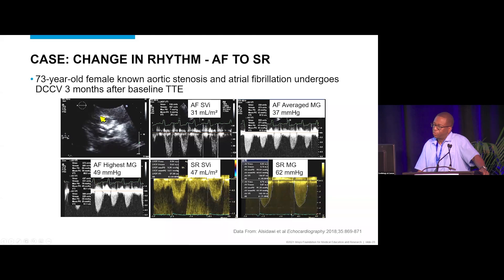At baseline in atrial fibrillation, forward flow was low, and the average mean gradient was 37 mmHg. However, within that averaged set was a single high mean gradient of 49 mmHg.